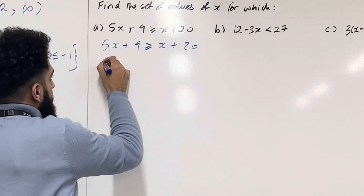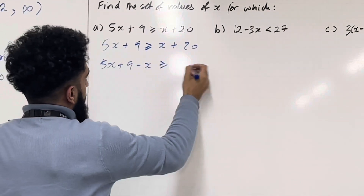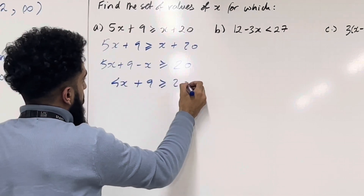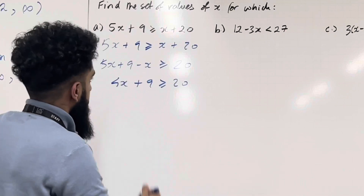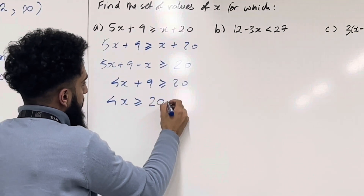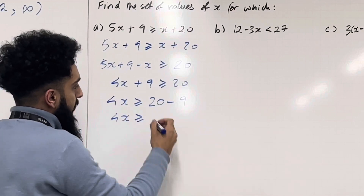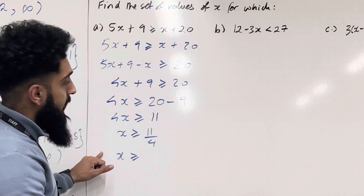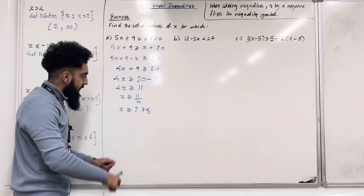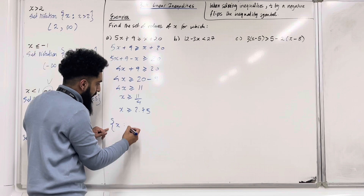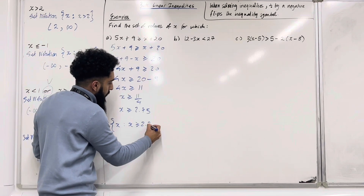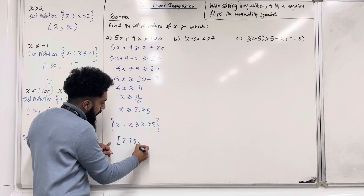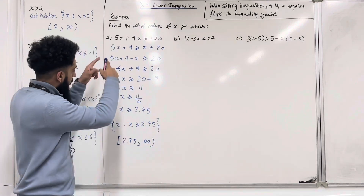Taking X to the left-hand side: 5X minus X is 4X, plus 9 is greater than or equal to 20. Taking 9 to the right-hand side: 4X is greater than or equal to 11, so X is greater than or equal to 11 over 4, which is 2.75. In set notation: the set of values of X such that X is greater than or equal to 2.75. The interval notation is: square bracket, 2.75 comma infinity, curly bracket.